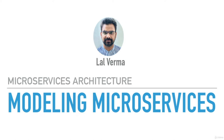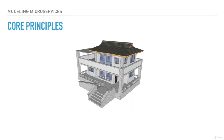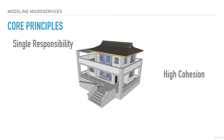Modeling microservices — in this section, we will understand how to model microservices. This helps in defining the boundaries and scope for the services. This is one of the most critical steps in microservices architecture and must be done right before moving to specific implementations. I'm going to discuss three important principles we must keep in mind: single responsibility, high cohesion, and loose coupling. They provide the building blocks for microservices architecture.